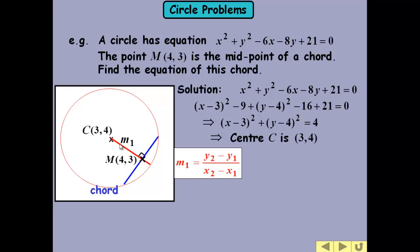To find the gradient of the radius, we use the difference in y over the difference in x using the two coordinates of the two points. And we get a gradient of minus 1. So we're interested in finding the equation of the chord. So we need the gradient of the chord, which is the negative reciprocal of this gradient.